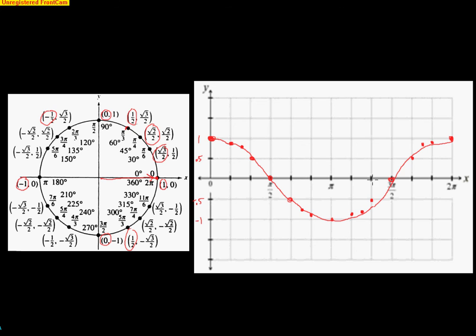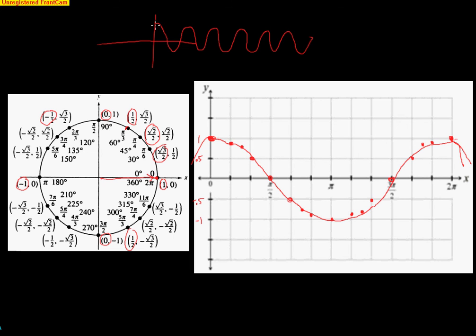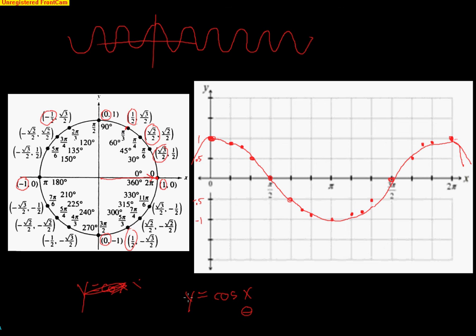At 7 pi over 4, we're at radical 2 over 2, about 0.7. At 11 pi over 6, we're at radical 3 over 2, about 0.87. At 2 pi, we're all the way back to where we started with an x-coordinate of 1. We get this nice smooth curve starting at 1, dropping to 0, down to negative 1, back to 0, and back up to 1. This curve repeats itself and also works going backwards, so the cosine curve keeps repeating up and down indefinitely.